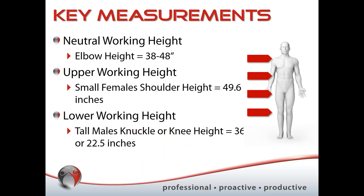Ideally, we like to use knuckle height. If you're standing with your arms at your sides, anything below your knuckle height — around 36.4 inches — you immediately have to start bending toward. However, if you're looking at racking, shelving, or filing cabinets, 36.4 inches as a lower limit and 49.6 inches as an upper limit doesn't give you a huge range to work in. We know below knuckle height means bending, so we may then talk about knee height as our next option.